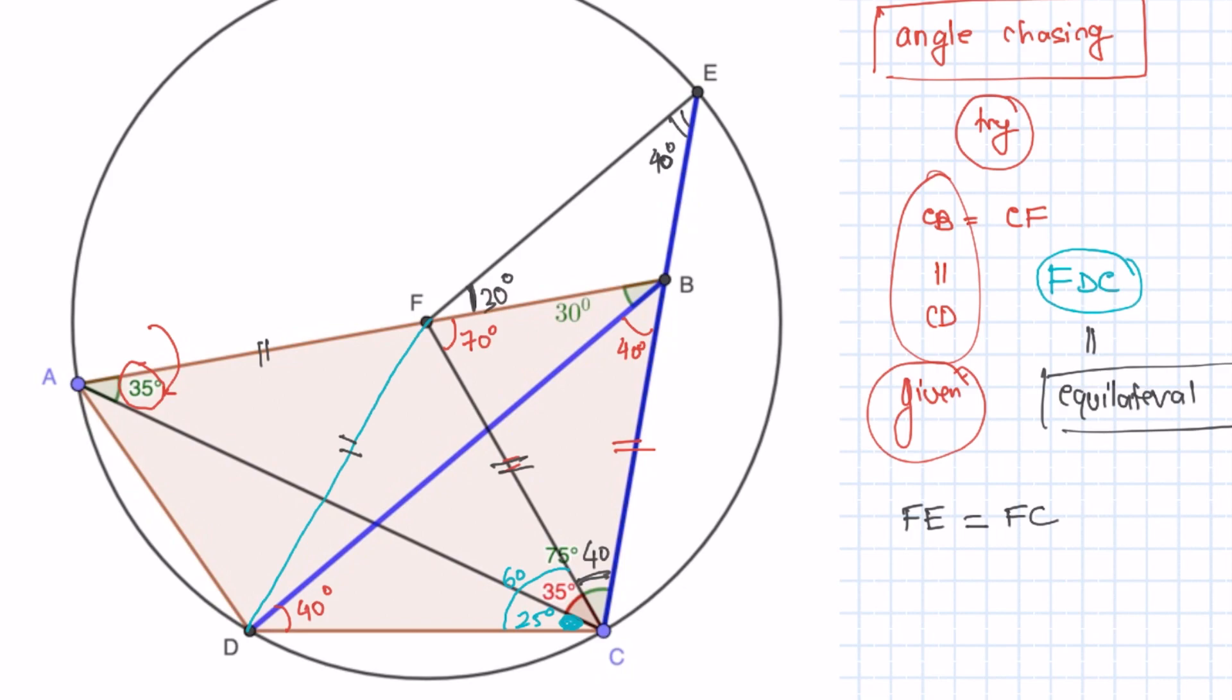Again, a little bit of angle chasing will tell you that because this total angle is 75, we chopped off at 35, so the remaining angle is 40. So this remaining angle is 40 because this is an isosceles triangle. As we just argued, FE is equal to FC. Now this angle is 100 degrees then, the remaining angle of the triangle. Since this is 70, therefore this is 30.